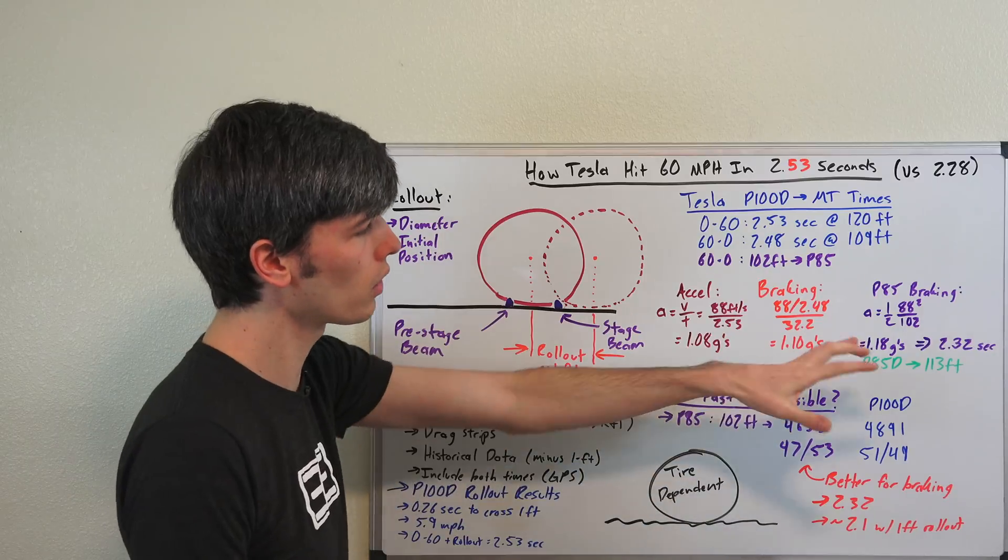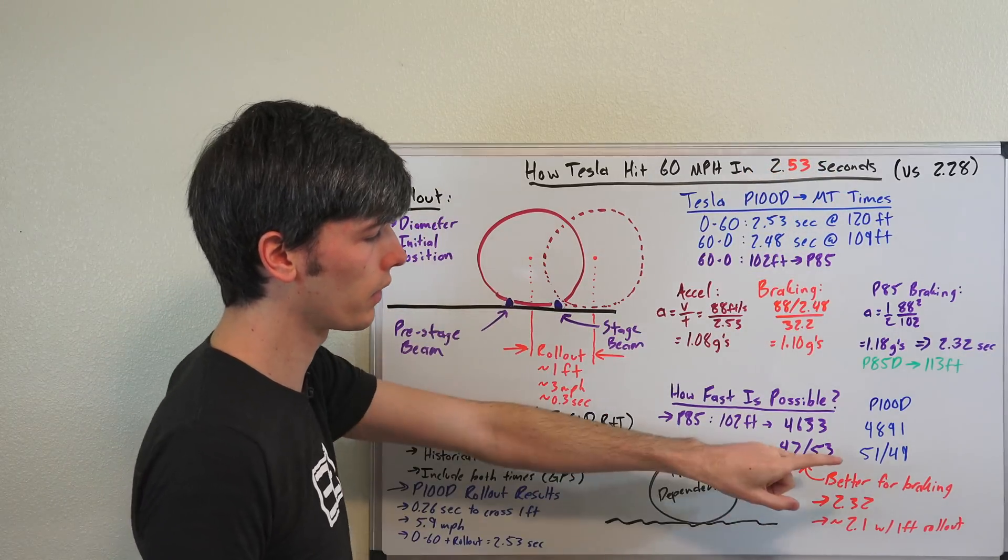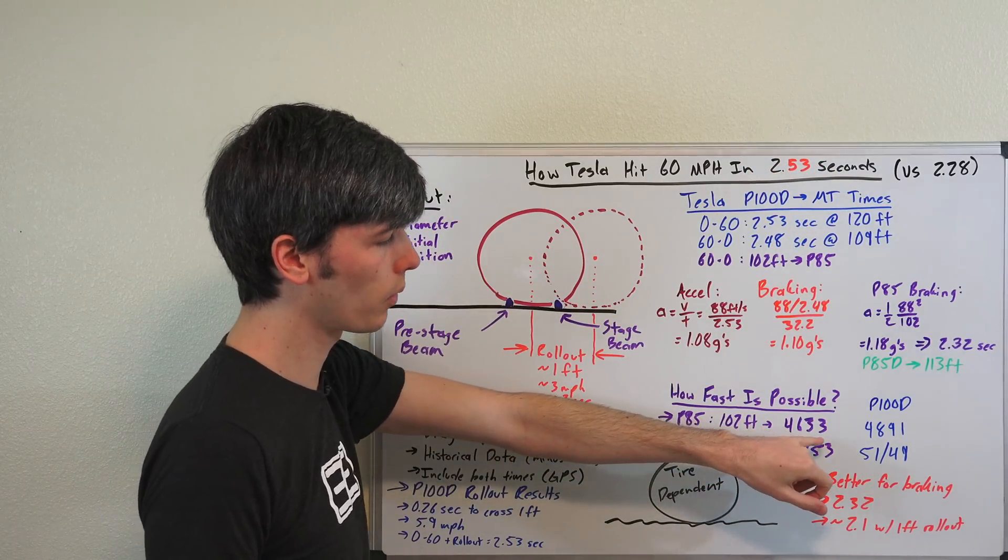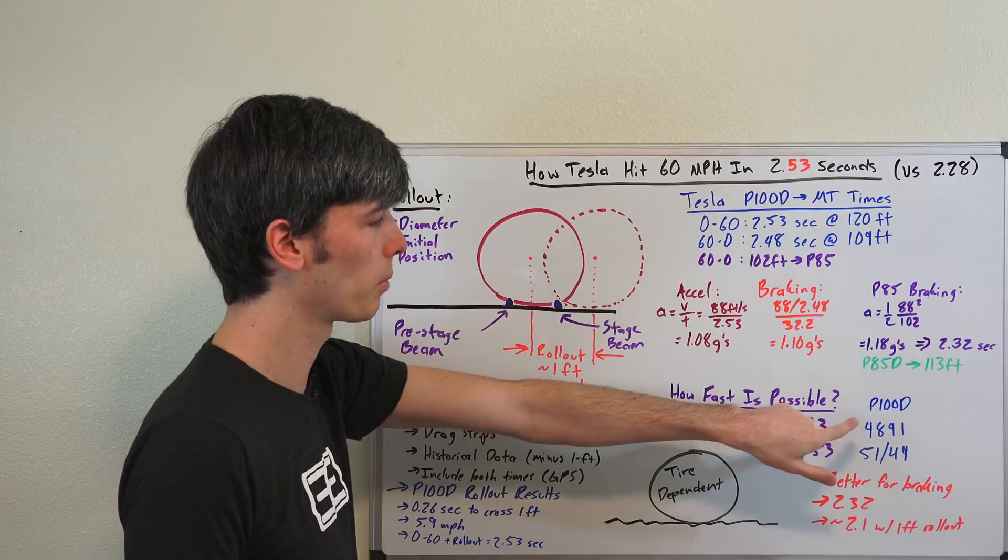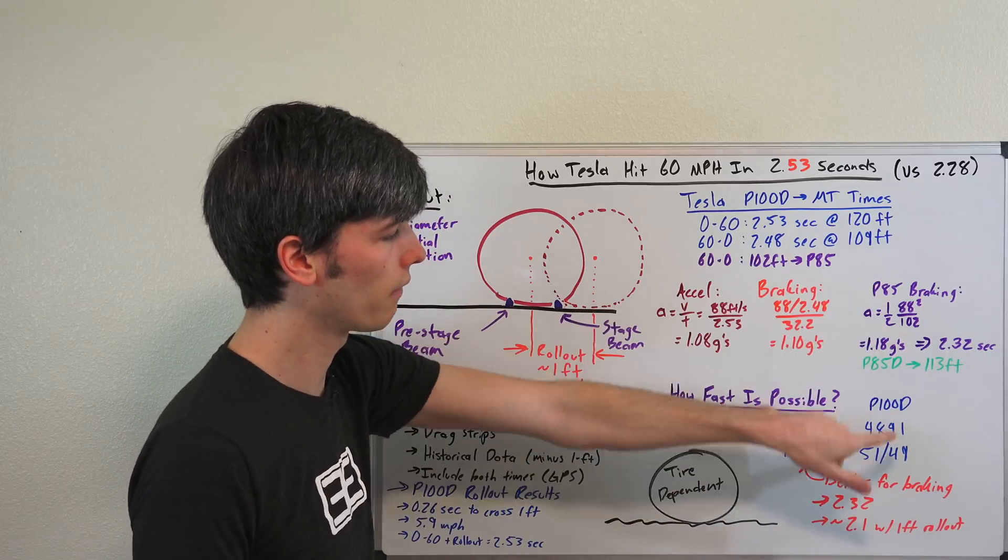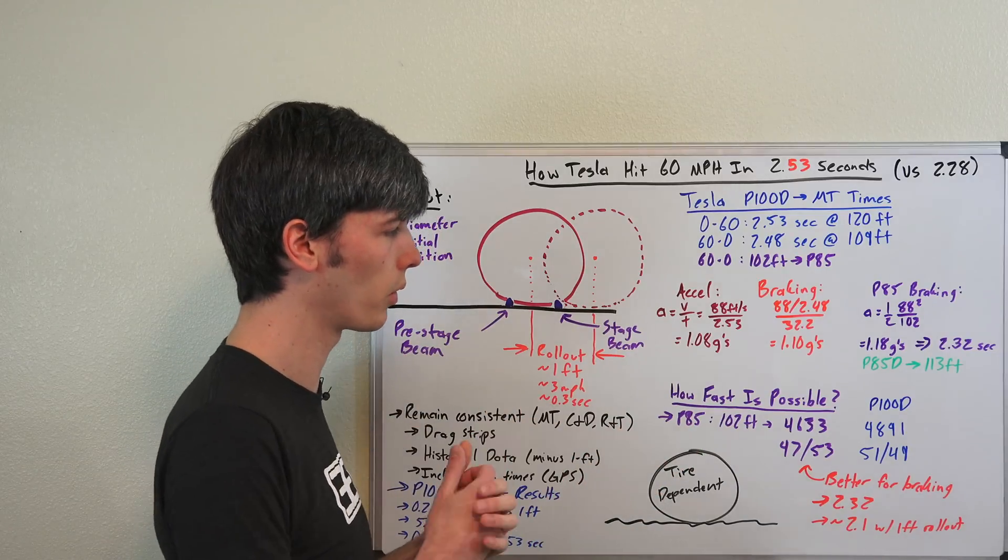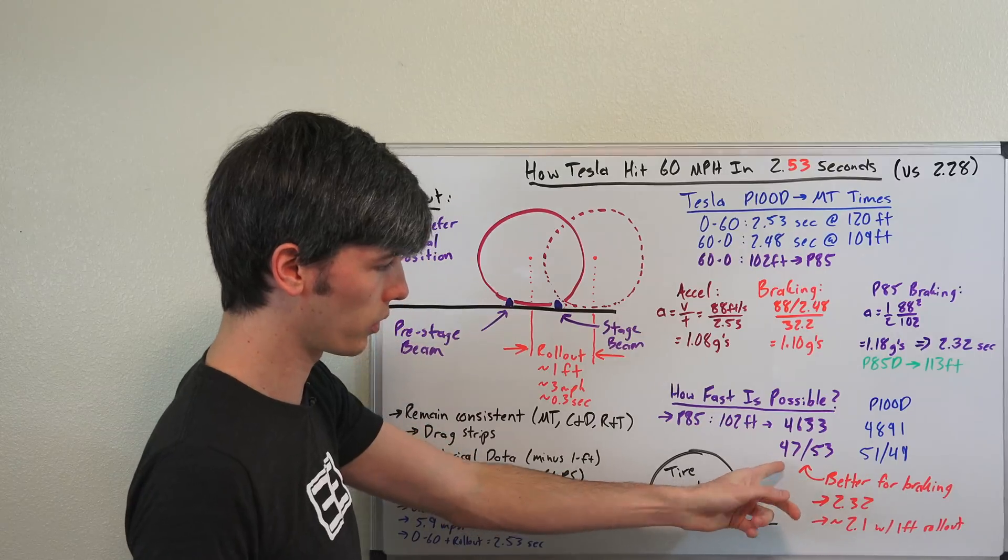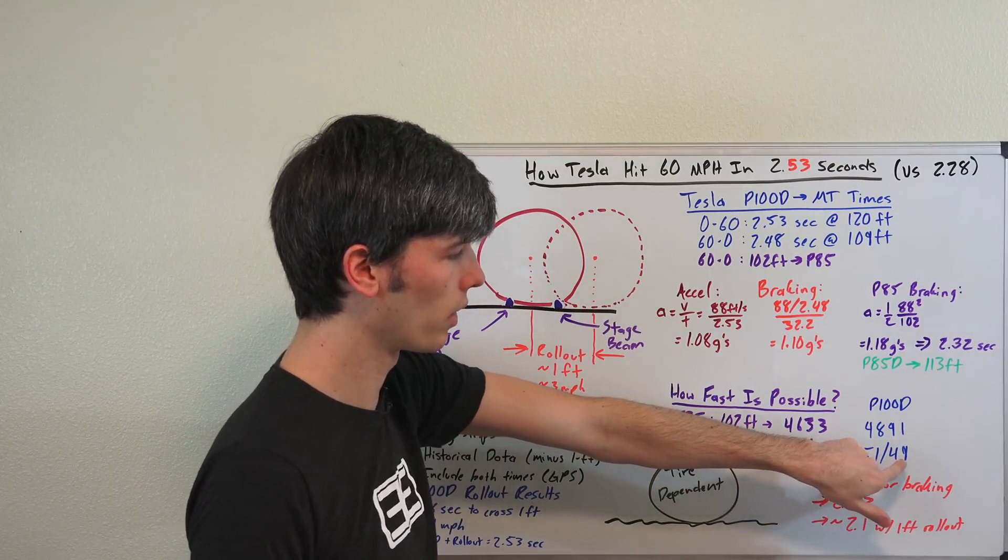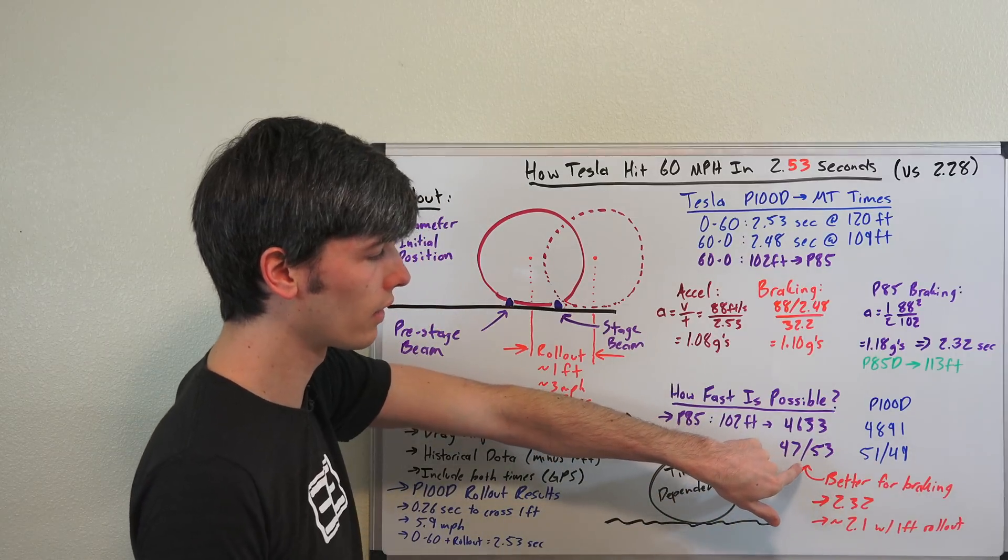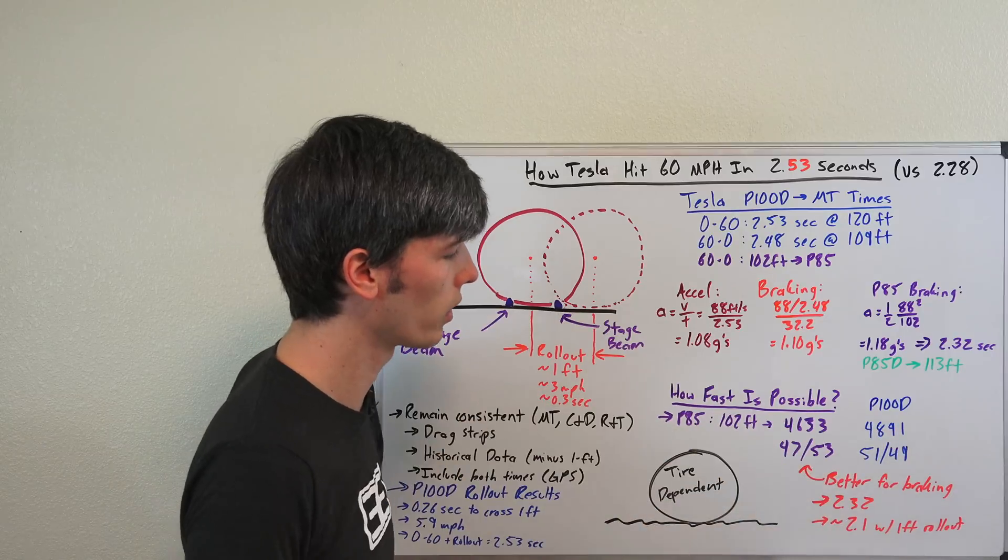So if you were to look at this vehicle here compared to the P100D though, there are some major differences. 4,633 pounds versus 4,891 pounds. So about a 250 pound difference between the P85 versus the P100D. It doesn't have that all-wheel drive system, so it doesn't have the two motors up front. And also has a better weight distribution for braking. 4,753 versus 5,149. So it's going to have a more even load under braking and be able to decelerate quicker than the P100D.